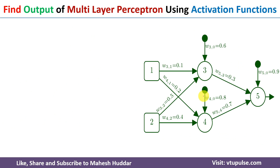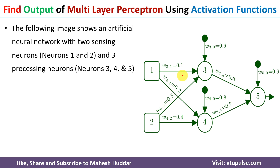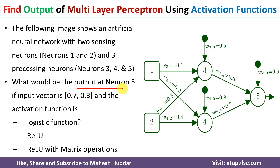A multilayer perceptron network with three layers is given to us. The input layer contains two neurons, the hidden layer contains two neurons, and the output layer contains one neuron. We need to calculate the output at the output layer neuron, that is neuron 5, with input vector 0.7 and 0.3 — the input at neuron 1 is 0.7 and the input at neuron 2 is 0.3.